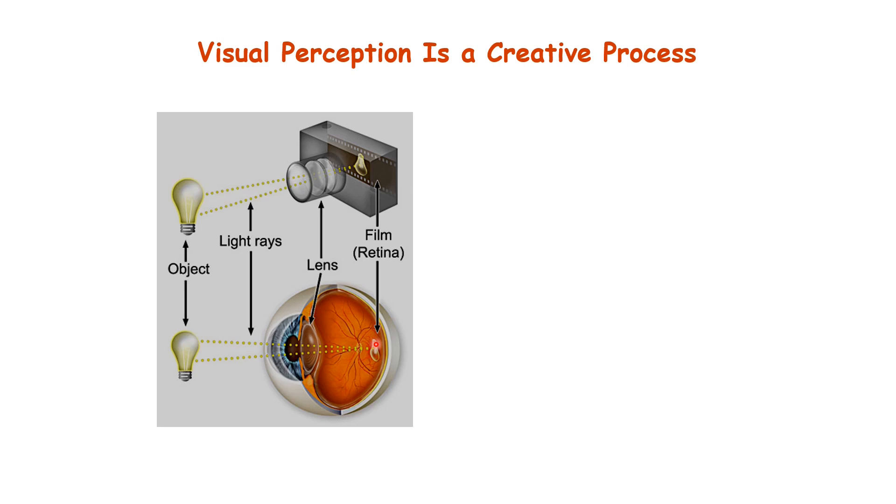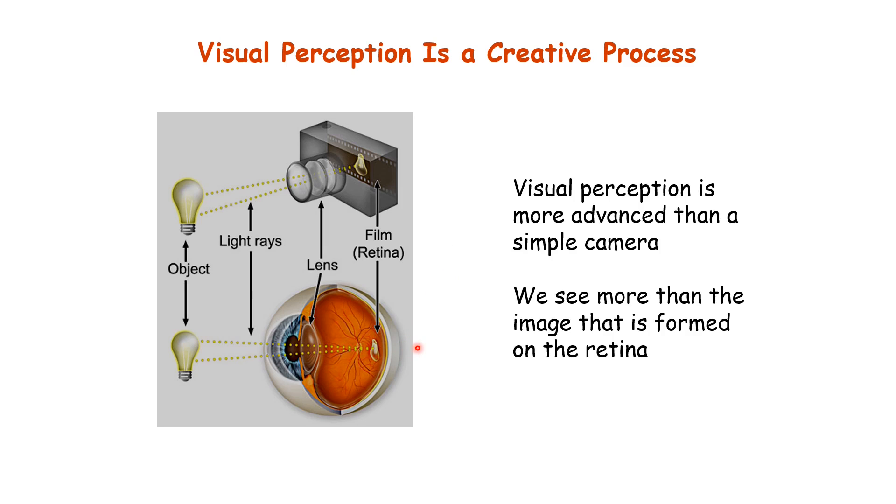But after the screen, the similarity begins to break down. The camera just transfers this pixel by pixel information to the computer and that's what the final image is. But in the case of eyes, there is a lot of processing that happens, and what we finally see is not simply the pixel-wise information that is projected on the retina.